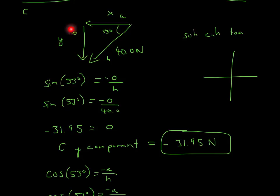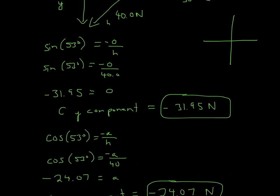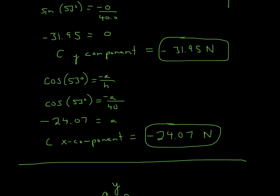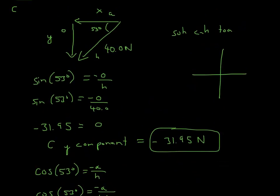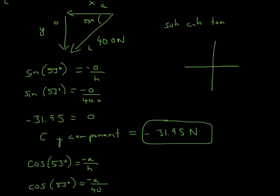Since we solved for C_y, now we solve for the x-component of C. The x-component is also negative because looking at the direction it's going to be negative on the x-axis. Adjacent over hypotenuse is cosine, so cosine of 53 degrees equals negative adjacent over 40. Multiplying each side by 40 gives negative 24.07. That's the adjacent, which corresponds to the x-component. So C_x equals negative 24.07 Newtons — four sig figs to prevent rounding error.